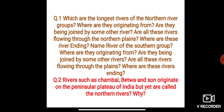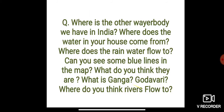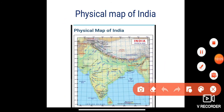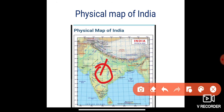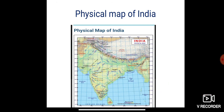The rivers that originated in the peninsular plateau — Chambal, Betwa, and Son — originate in the peninsular plateau, but they flow towards the northern plain and then join the rivers originating from the northern mountains. Because they flow toward the northern plains and mix with the northern rivers, they are part of the northern group of rivers and are called northern rivers.